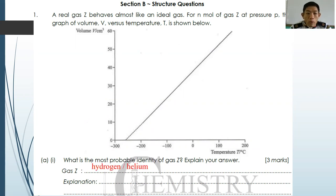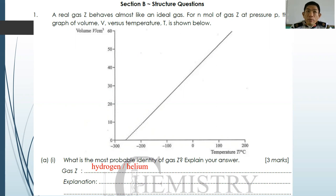Why can they behave almost like an ideal gas under room temperature and pressure? If you notice carefully, hydrogen and helium are among the two earliest elements in the periodic table. Therefore, they are actually the lightest gases. When you have the lightest gas, there is almost no intermolecular forces between the particles, so they can behave almost like an ideal gas under room temperature and pressure.